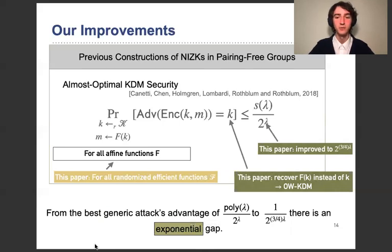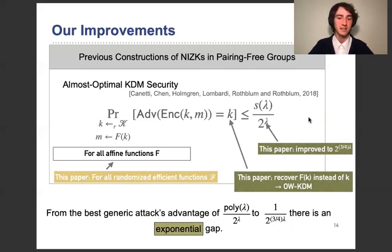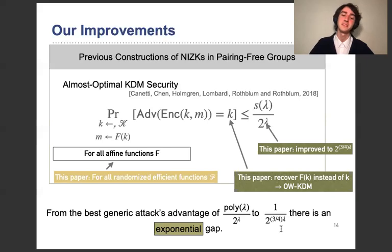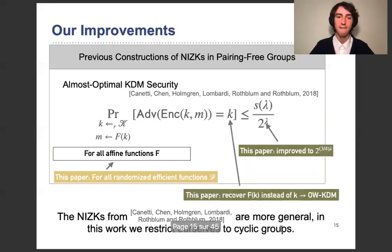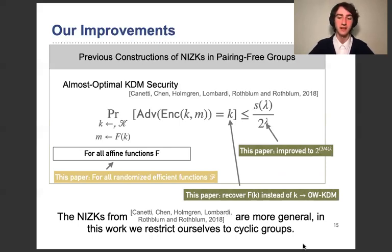Why was it bad to have almost optimal security — s(λ) over 2^λ? This was because the best generic attack, Rho Pollard, is known to give a polynomial advantage over exhaustive search, so the advantage is poly(λ) over 2^λ. If we manage to improve the exponent in our assumption, we have an exponential gap between the previous best assumption used to construct NIZKs in pairing-free groups and our assumption. But I want to mention that the NIZKs from the previous paper are more general, while we only restrict ourselves to cyclic groups.